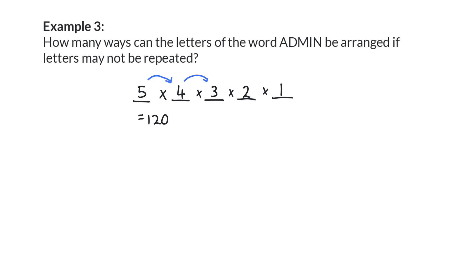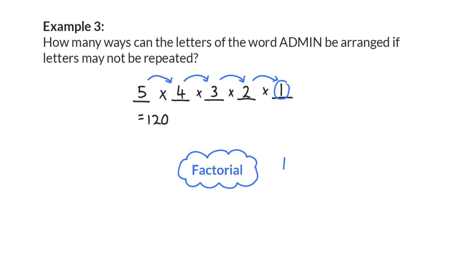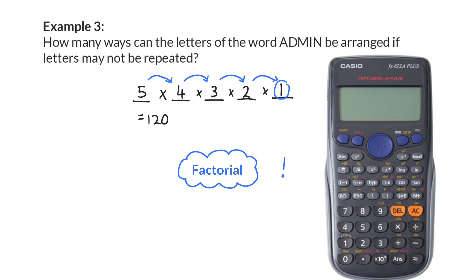When a product is determined of values decreasing by one right up to the value of one, it is called a factorial. The symbol used for factorial is an exclamation mark. You will also find this symbol on your calculator, and therefore you could determine the answer for example 3 by pressing 5 factorial on your calculator.